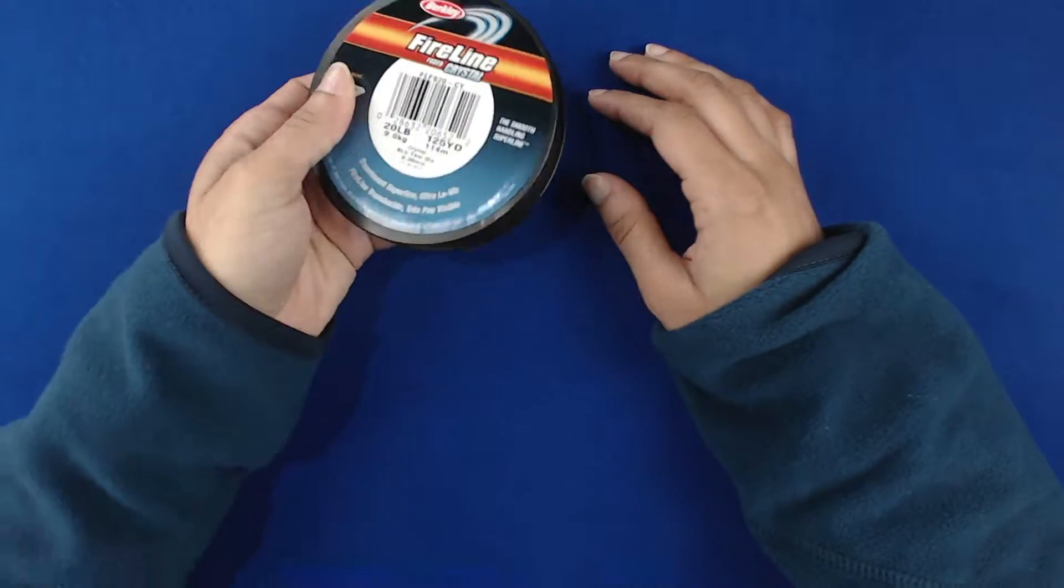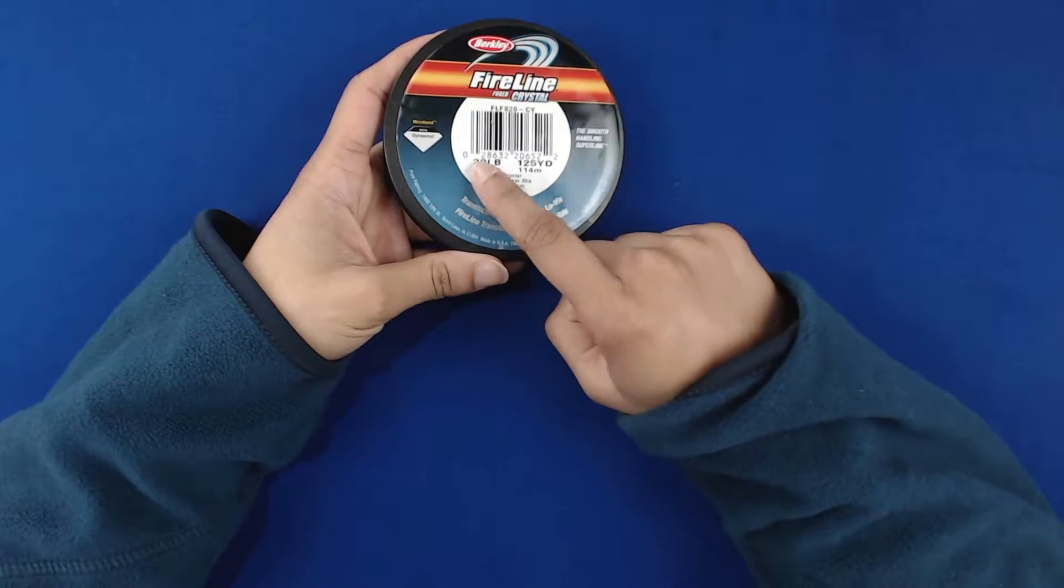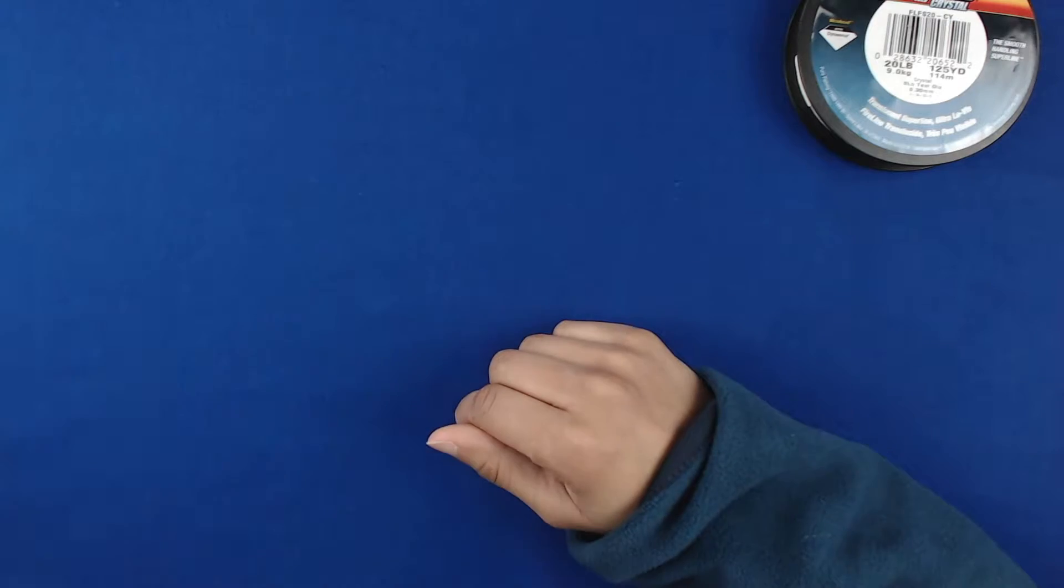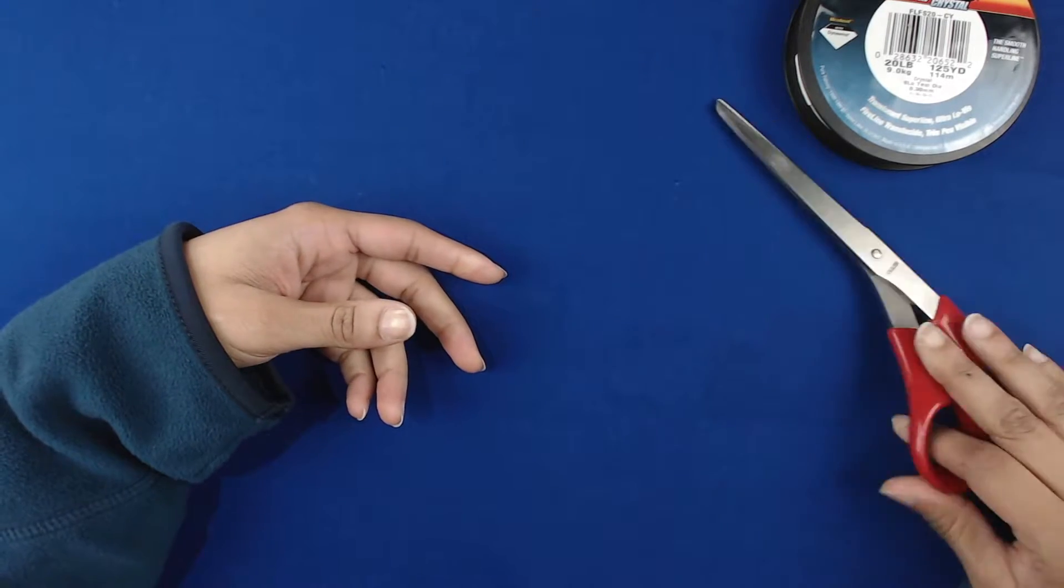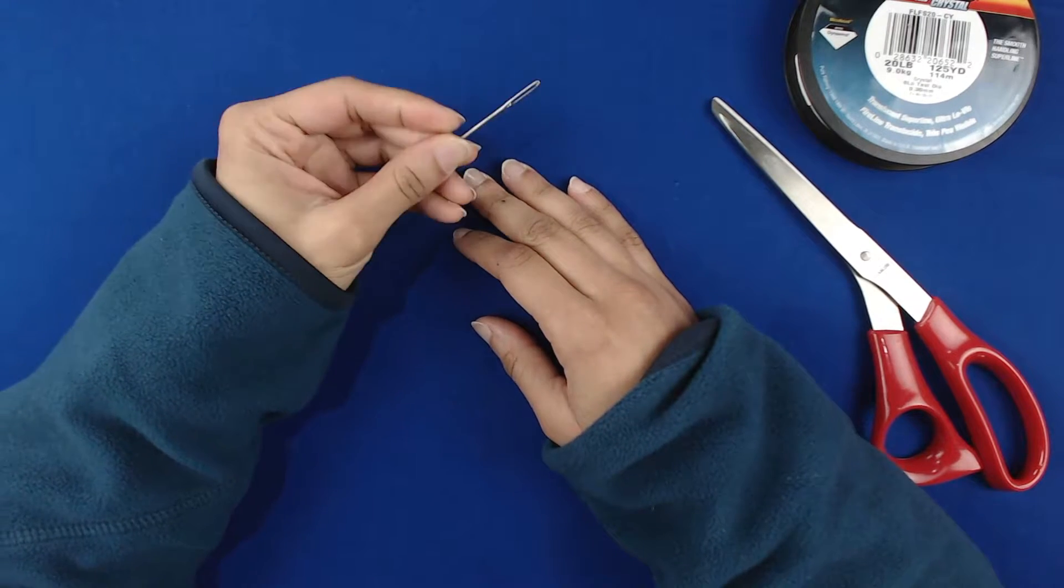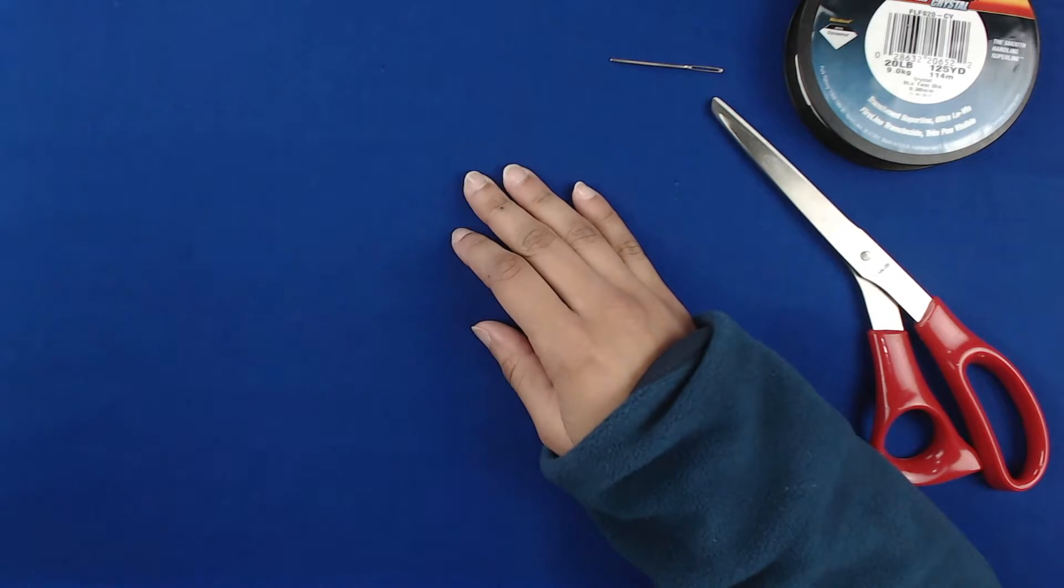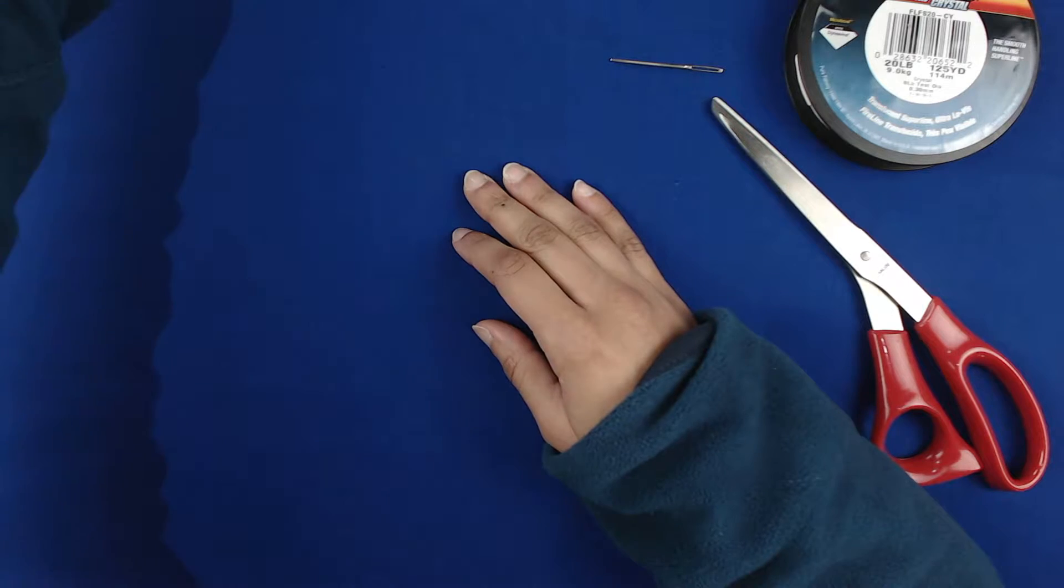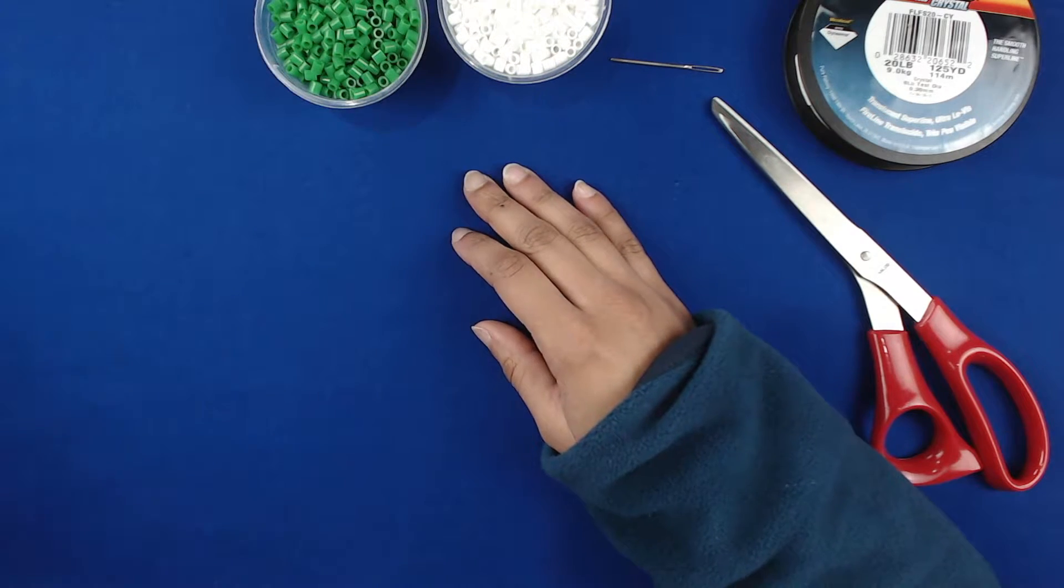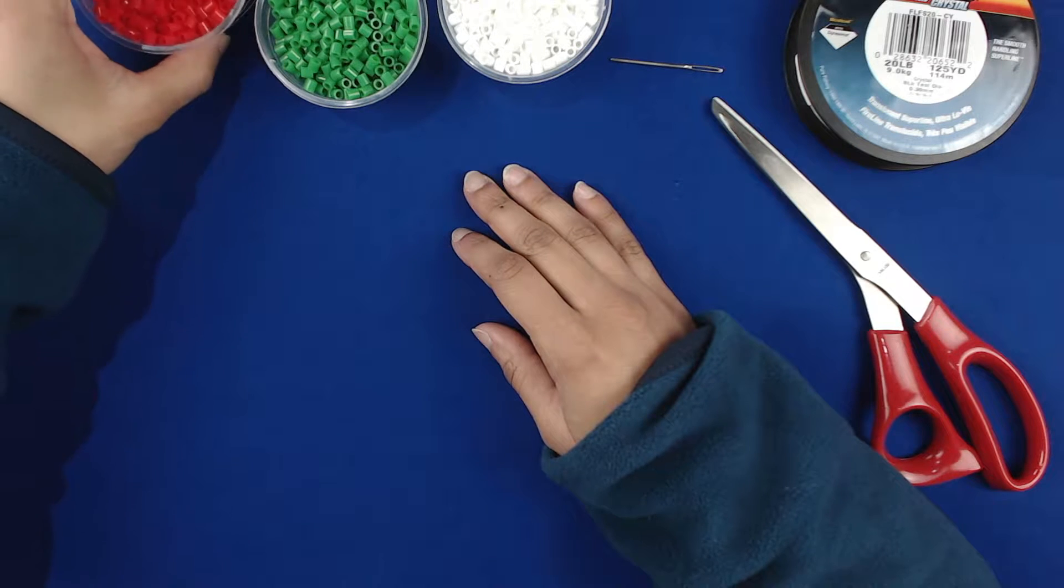So for my project I am using some fire line. And then I'm using some scissors to cut my fire line. And then next I've got a needle. And then I'm going to be using fuse beads. Yep, fuse beads instead of little seed beads instead of delicates.